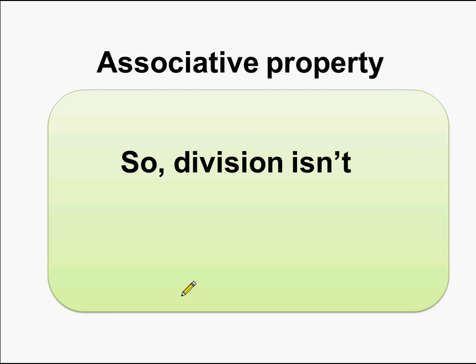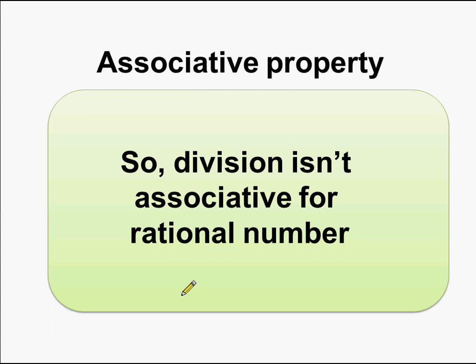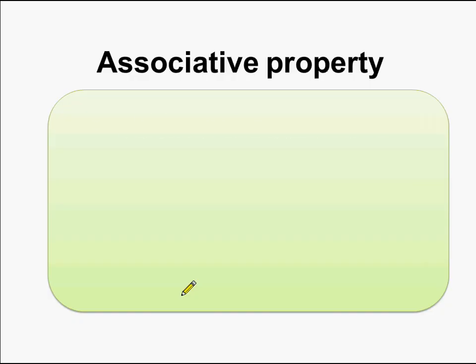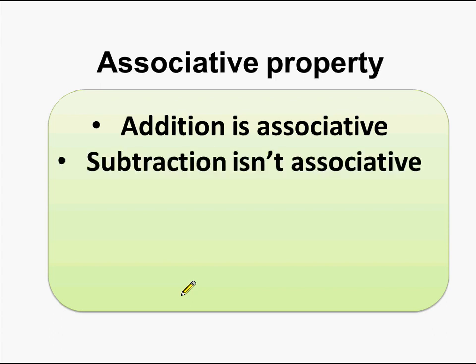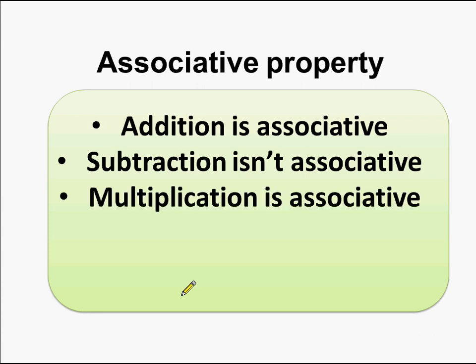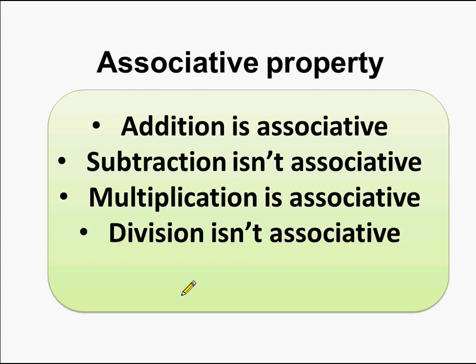So what do we see? Division is not associative for rational numbers, as the answer is different when the grouping is changed. To summarize: addition is associative for rational numbers, subtraction is not associative, multiplication is associative, and division is not associative. Now you know about the associative property of rational numbers.